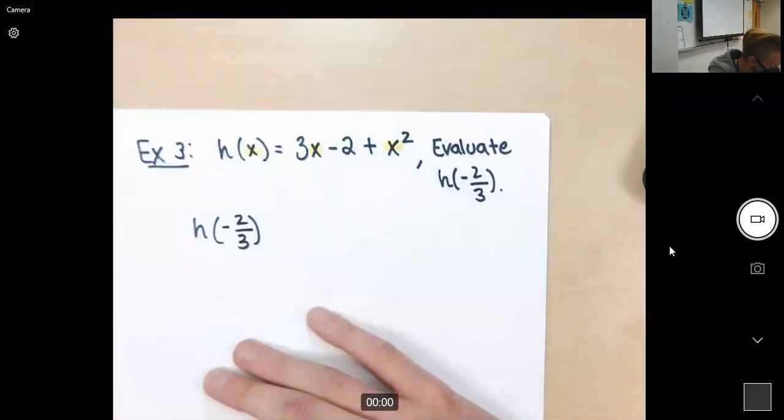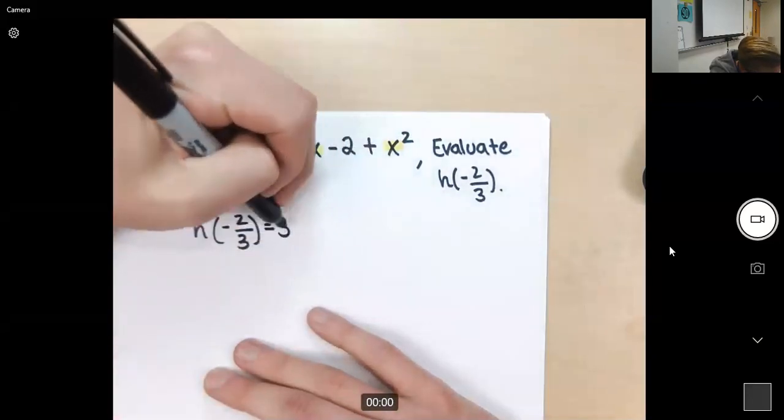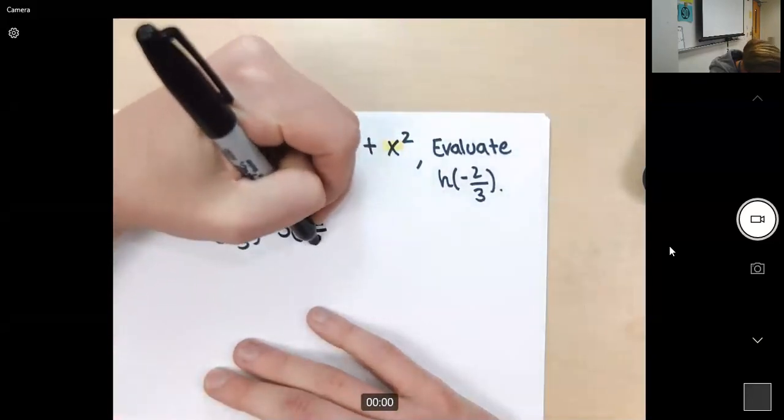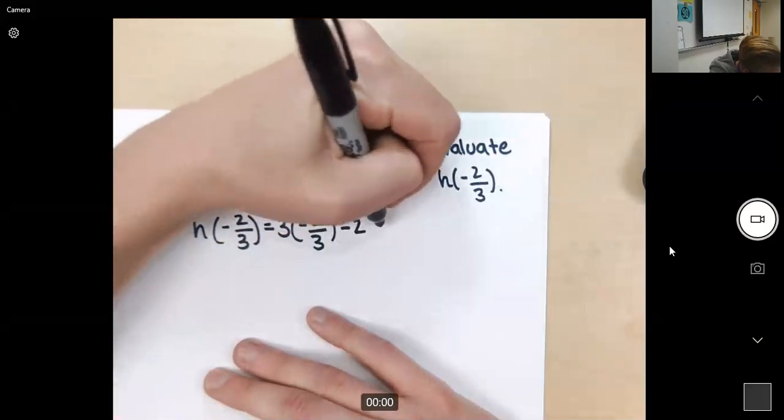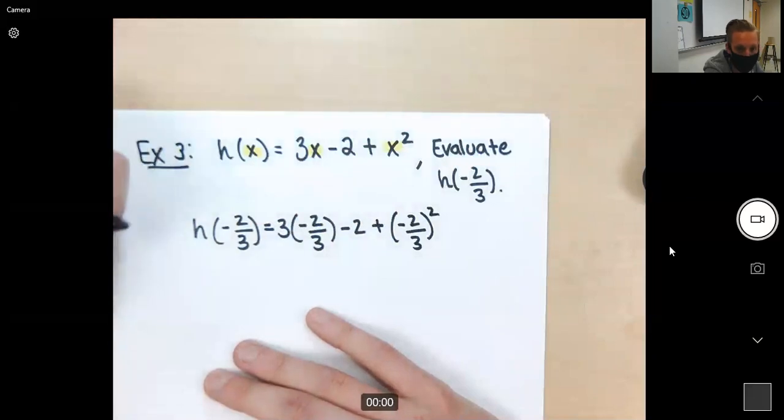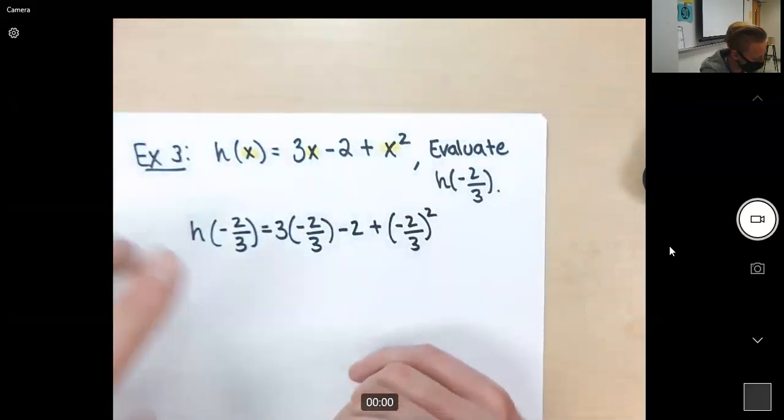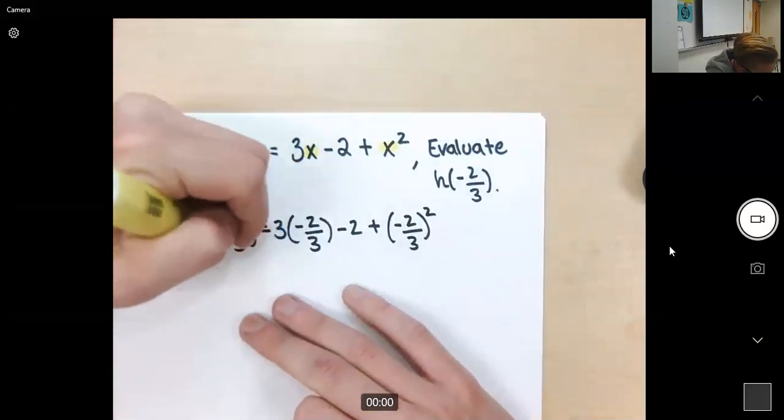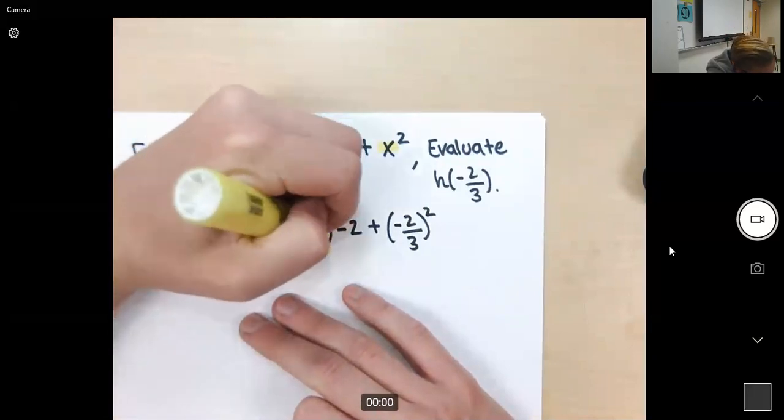So when I want to evaluate what is h of negative 2 thirds, watch how careful I am with this. We get 3 times negative 2 thirds minus 2 plus negative 2 thirds squared. Notice my use of parentheses, and notice that the negative is inside those parentheses.